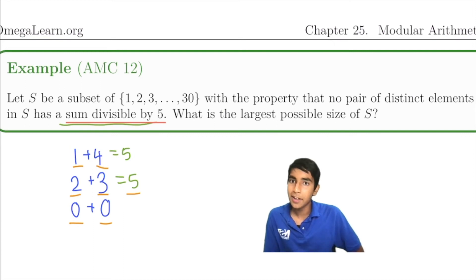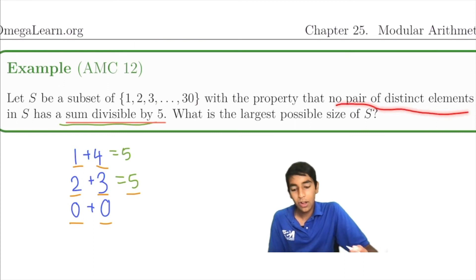Because it says that no pair of distinct elements. So if we just have a 5 in there and no other multiples of 5, it's not going to add anything to produce a multiple of 5. Sure, it's a multiple of 5 on its own, but that doesn't matter.